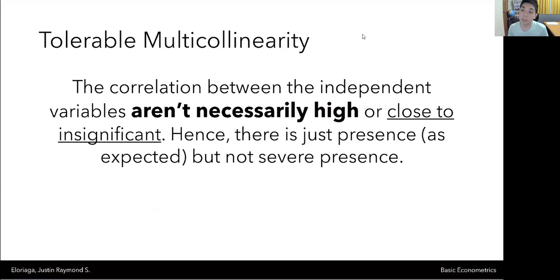The first degree is tolerable multicollinearity. And it just means that the correlation between the independent variables aren't necessarily high or their correlation is relatively insignificant. Hence, it's just a presence, it's just there, but it's not a severe presence. And basically, that's quite a straightforward definition when we deal with tolerable multicollinearity.